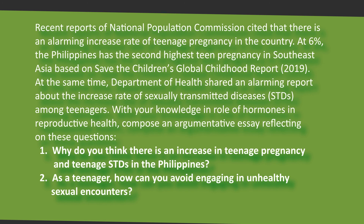For the evaluation, recent reports from the National Population Commission cited an alarming increase in the rate of teenage pregnancy in the country. At 6%, the Philippines has the second highest teen pregnancy rate in Southeast Asia, based on Save the Children's Global Childhood Report in 2019. At the same time, the Department of Health shared an alarming report about the increased rate of sexually transmitted diseases among teenagers. With your knowledge of the role of hormones in reproductive health, compose an argumentative essay reflecting on these questions: Why is there an increase in teenage pregnancy and sexually transmitted diseases in the Philippines? As a teenager, how can you avoid engaging in unhealthy sexual intercourse?